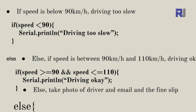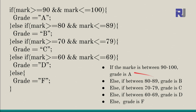Now let's implement the grading scheme. We write: if mark is greater than or equal to 90 AND mark is less than or equal to 100, then grade = 'A'. Here mark is a variable, and the two ampersands (&&) mean AND — both conditions must be true. We assign the character 'A' to the variable grade. Grade is also a variable.